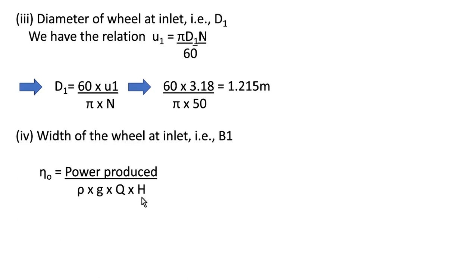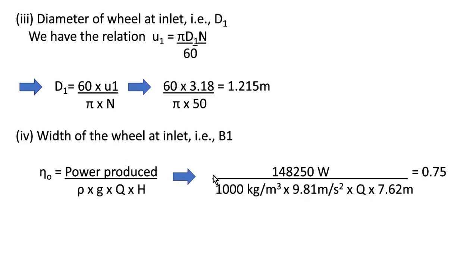We are given the values for efficiency and output power. Substituting these values and solving for Q, we get Q or discharge to be 2.6443 meter cube per second.